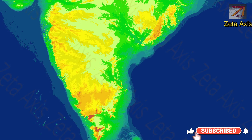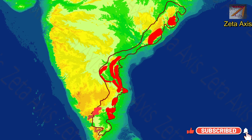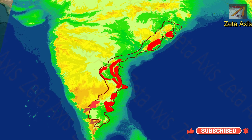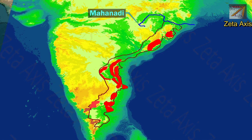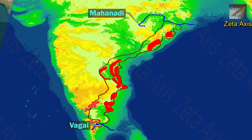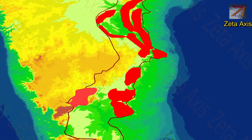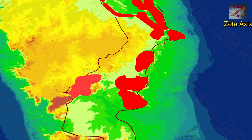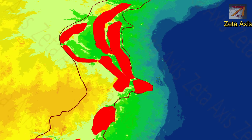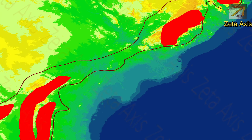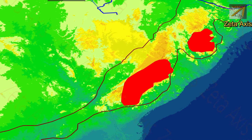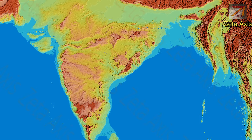The Eastern Ghats are a discontinuous chain of mountain ranges which starts from Mahanadi in Odisha and continues till Vaigai river in Tamil Nadu. The different sections of Eastern Ghats do not have any structural unity, nor were they all formed simultaneously. Most of these sections were created independent of each other.